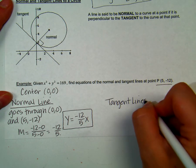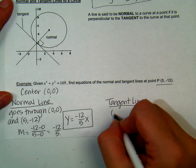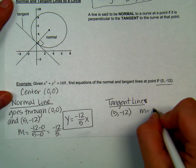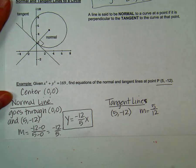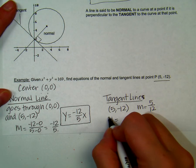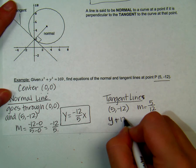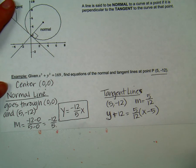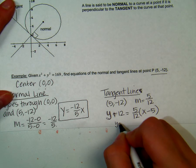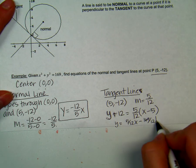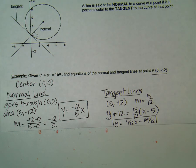Now we must find our tangent line. The tangent line goes through the point (5, negative 12) and is perpendicular to our normal line. Since the slope of our normal line is negative 12 over 5, the slope of the tangent line is going to be 5 over 12. To find our equation, we put it in point-slope form: y plus 12 equals 5 over 12 times x minus 5. If you're asked to put it in slope-intercept form, you would solve for y and get y equals 5 over 12 x minus 169 over 12.